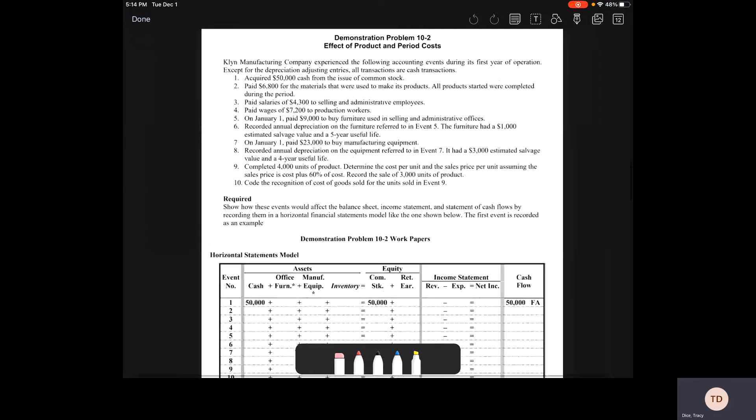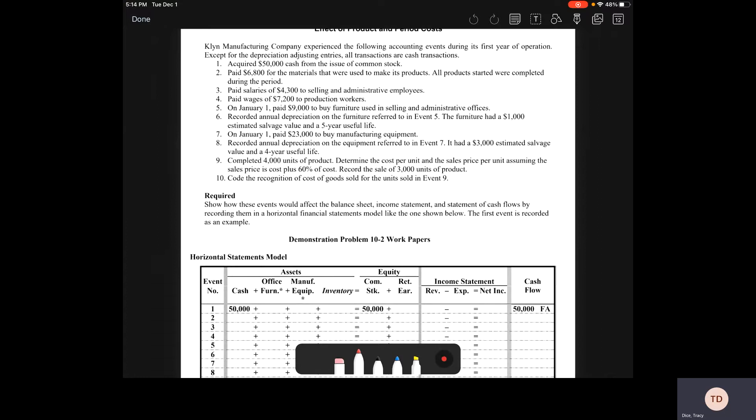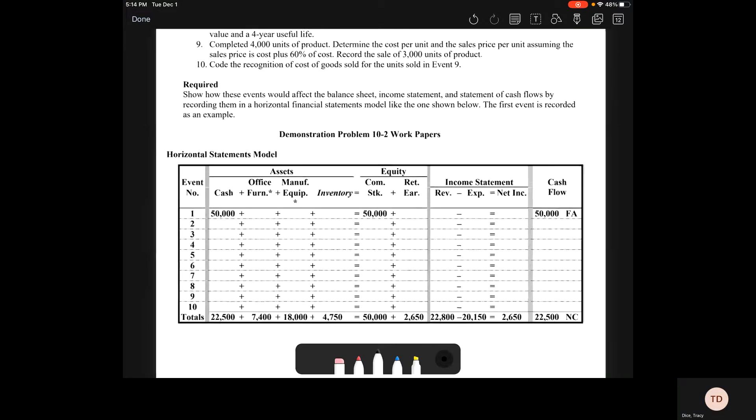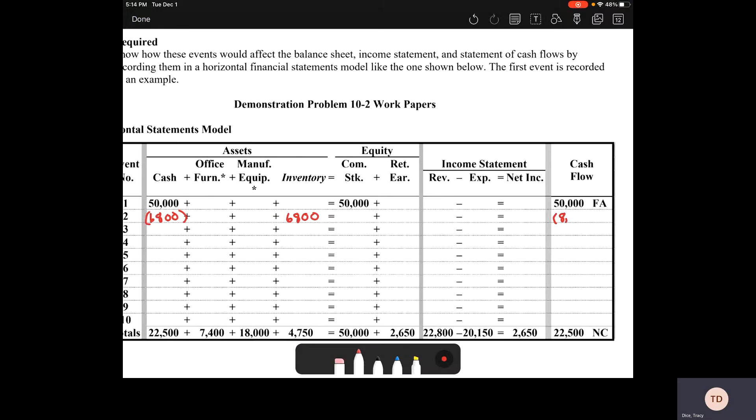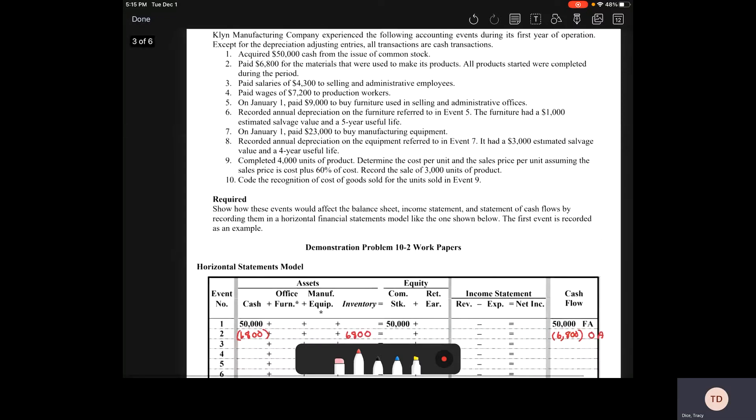We're going to start with our first year of operation. Except for the depreciation adjusting entries, all of them are cash transactions. We start with our $50,000 cash flow, which they've already done for us. Now we pay $6,800 for the materials that were used to make the products. All the products were completed during that period, making these raw material costs. We come down to our statements model. That $6,800 comes out of our cash, goes into our inventory, and it comes out of our cash flow. $6,800, not $8,000. That is an operating activity. Remember, this is not an expense because it's going into our cost of goods sold at the end, since it's in inventory right now.